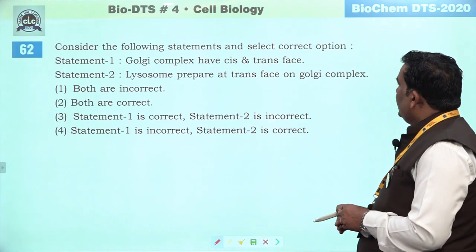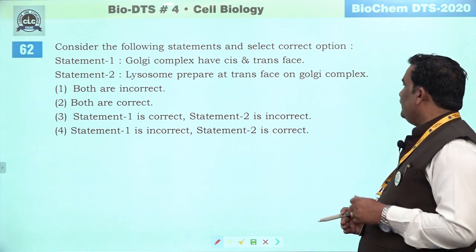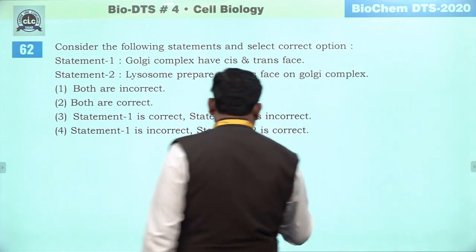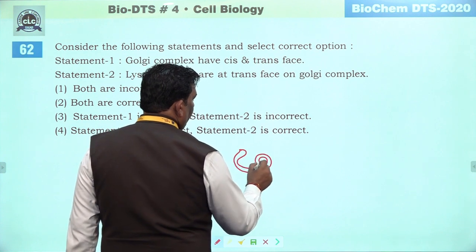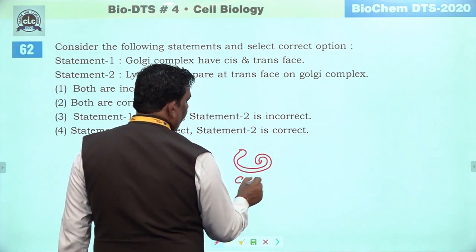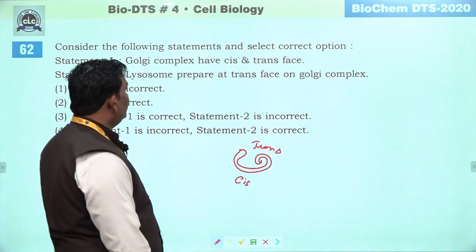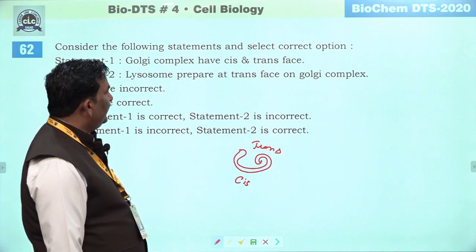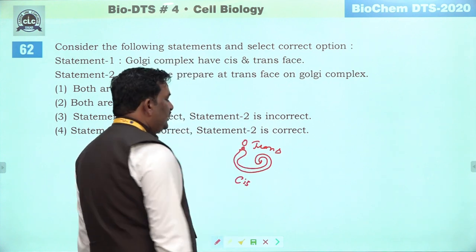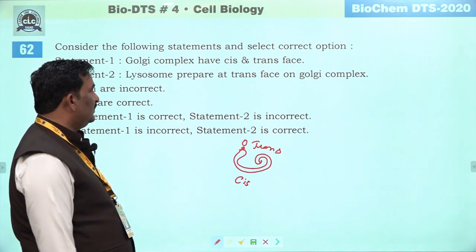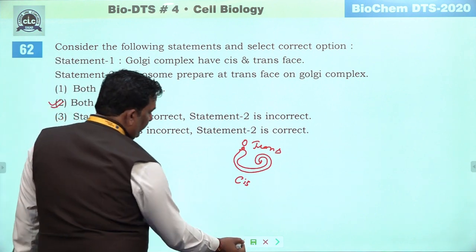Next question: consider the following statements and select correct option. Statement one: Golgi complex have cis and trans face — jo Golgi body hote hain, unka towards the nucleus face cis face kahlata hai, aur towards the periphery woh trans face kahlata hai — yeh sahi hai. Statement two: lysosomes prepared at trans face — yahan se jo budding ki process hoti hai, isi process se lysosomes ka formation hota hai, woh bhi trans face par ho raha hai. Both are correct — second humare liye better option hai.